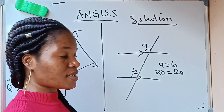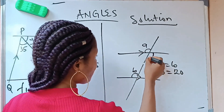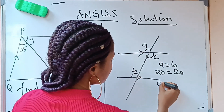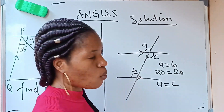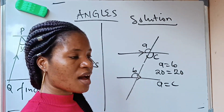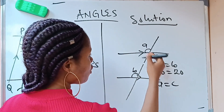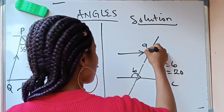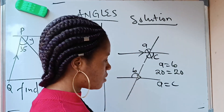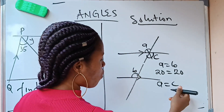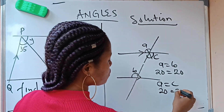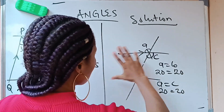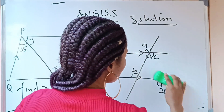Another type of angle that can be formed is a vertically opposite angle. There is a law that a is equal to c because vertically opposite angles are equal. This angle and this angle are vertically opposite, so they are equal. If you draw a straight line, they are vertically opposite to each other — so if this is 20, this is also 20.